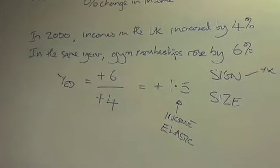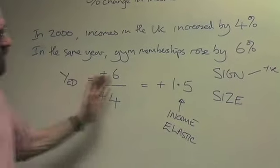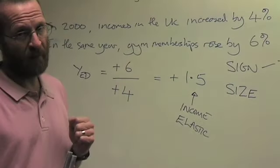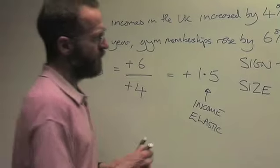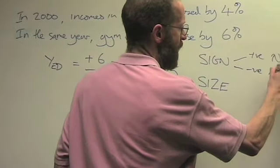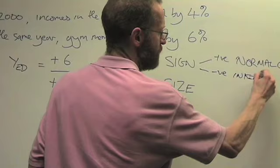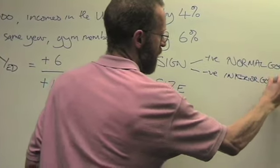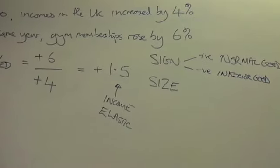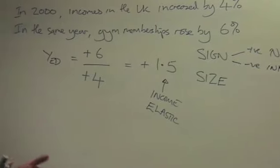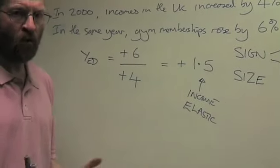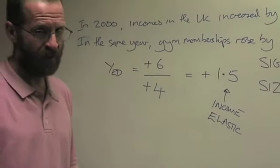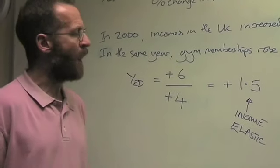The alternative is when you work out the calculation, you'll get a negative number. If you get a negative number, then it is referred to as an inferior good. And once again, in economics, an inferior good is defined as one that you buy more of as your income goes down, and less of as your income goes up.